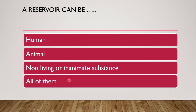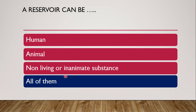Next question: a reservoir can be human, animal, non-living or inanimate, or all of them. The correct answer is all of them. For example, diseases like rabies, influenza, and yellow fever have animal reservoirs. Reservoirs can also be non-living things like soil, contaminated objects, or laboratory materials. Disease agents such as microorganisms, viruses, bacteria, rickettsiae, and parasites grow in the reservoir, which is the first host.